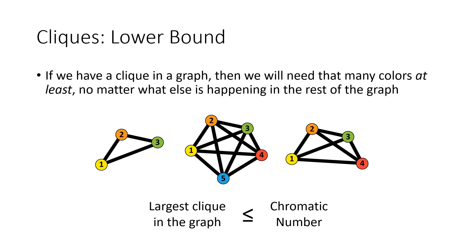So if we do have a clique in a graph, what we notice is that all of the vertices in that clique all have to be different colors because they're all connected to each other. No two of those vertices could ever be the same color because then we would violate our coloring rule. So the chromatic number has to be at least the size of the biggest clique in the graph. So if we have somewhere in our graph five vertices that look like that, we're going to need at least five colors. The chromatic number would be greater than or equal to the size of that largest clique.